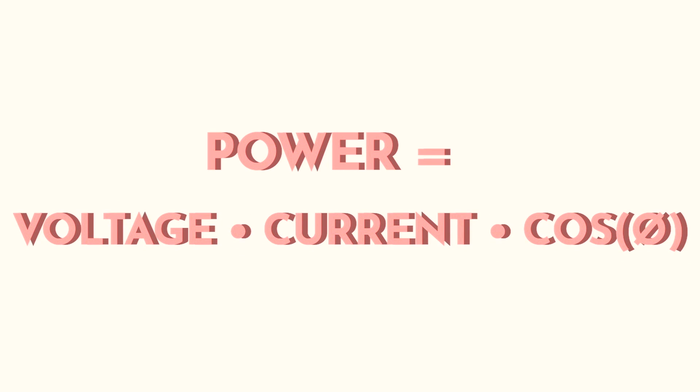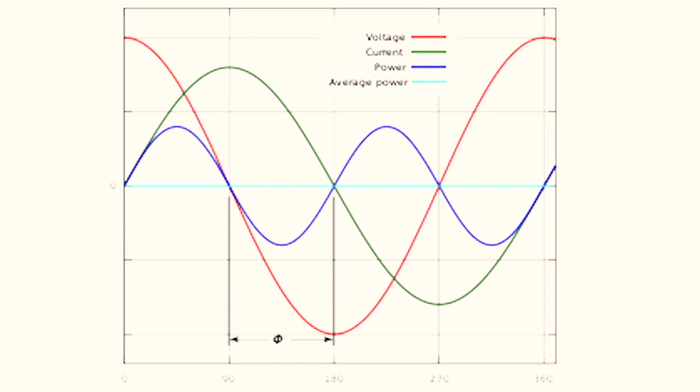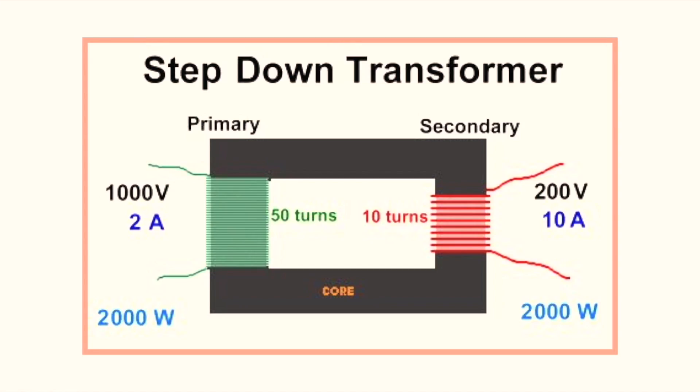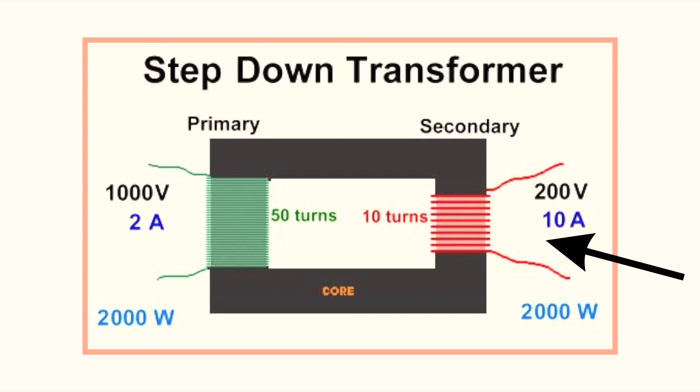Technically, the equation for AC waves is voltage times current times power factor, which looks at the average power over time, because AC waves are prone to changing. But it's still the same concept. The second category of transformer is the step-down transformer — the opposite of a step up. It takes a higher voltage and lowers it.